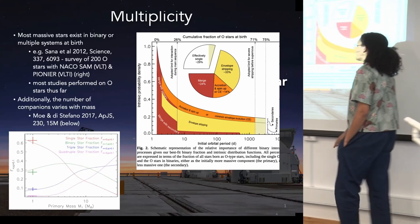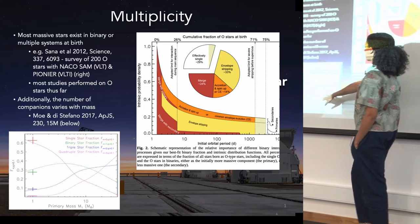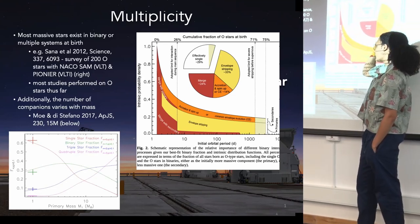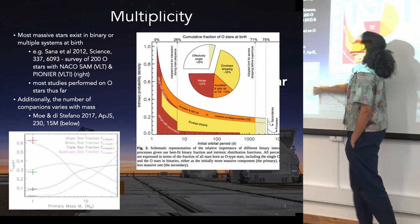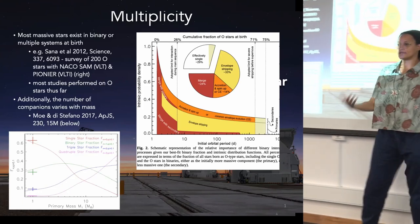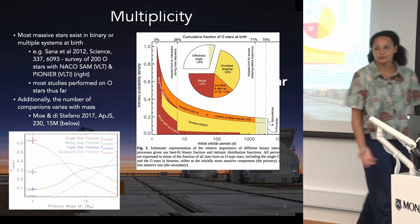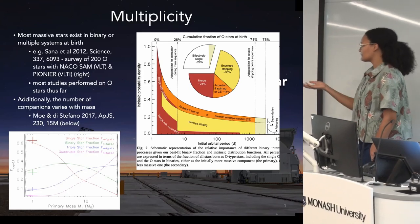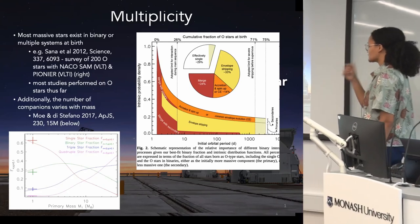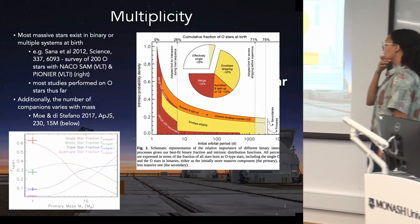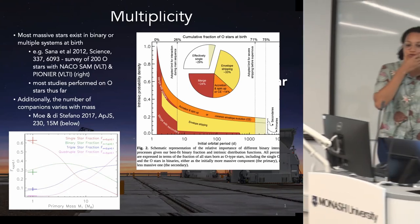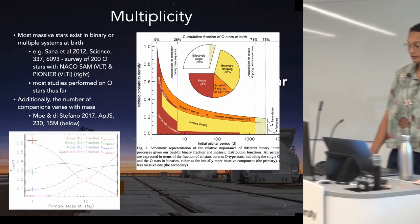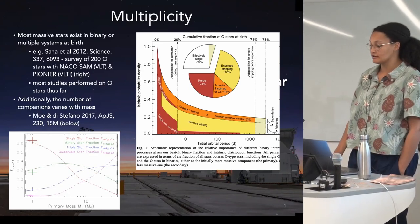It's not all just about binaries. The further you go up in mass, the more common we think higher order systems like triples and quadruples become. This introduces huge dynamical effects, much more complex than just a simple two-star system, and these need to be taken into account if we want to properly understand the evolution of these stars.